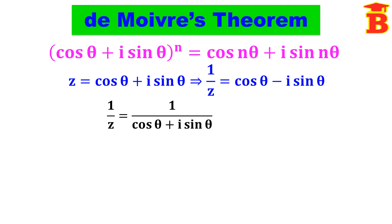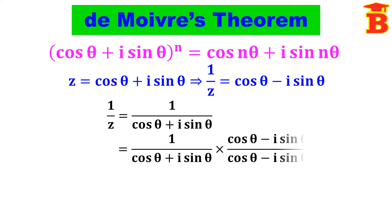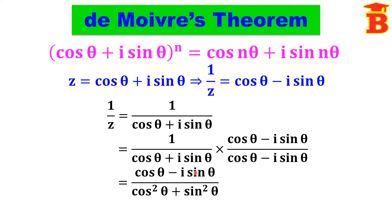The reason is: if we take 1/z, that is 1/(cos θ + i sin θ), we simplify by multiplying and dividing by its conjugate, cos θ − i sin θ. The numerator becomes cos θ − i sin θ. In the denominator, we use the formula (a + ib)(a − ib) = a² + b², so cos²θ + sin²θ = 1. Therefore we get cos θ − i sin θ. So taking the reciprocal of the given complex number is nothing but the conjugate.